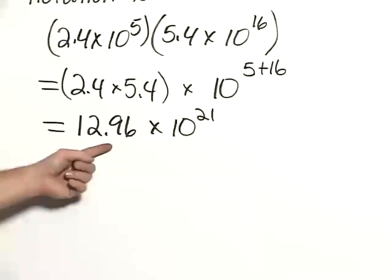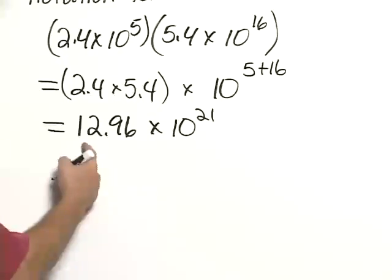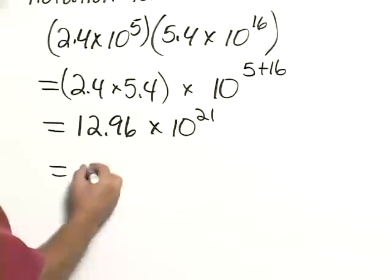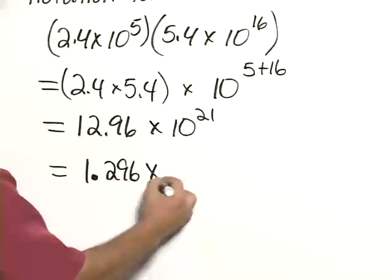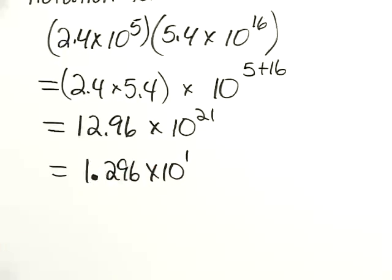Well, of course, we need to write the number in scientific notation. 12.96 becomes 1.296 times 10 to the 1st power, then multiplied by 10 to the 21st.